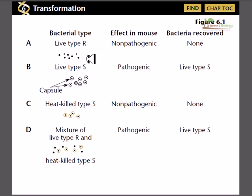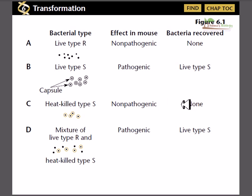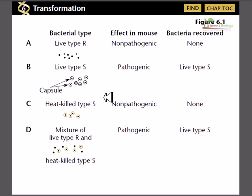R-type was non-pathogenic but S-type was pathogenic. He then tried to see whether the S-type bacteria, if killed, would still be able to produce disease. In the third set of experiments, he killed the S-type bacteria with heat shock and injected it into the mouse. The result matched his hypothesis — the heat-killed S-type bacteria was unable to kill the mouse, so it is non-pathogenic after the heat shock.